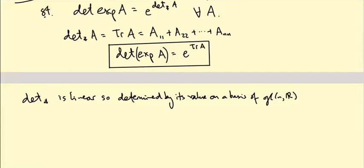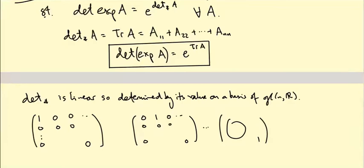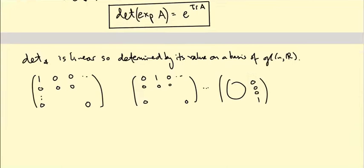I'm going to use the stupidest basis you can think of: the matrix with only a 1 in the (1,1) position, the matrix with only a 1 in the (1,2) position, all the way down to the bottom right. That's a basis for the set of matrices.